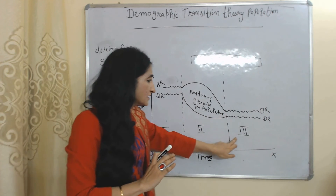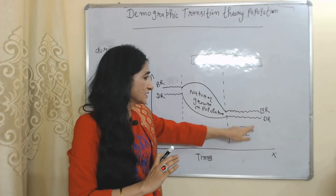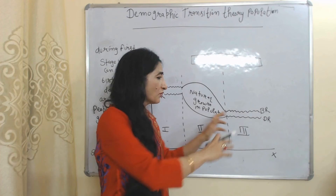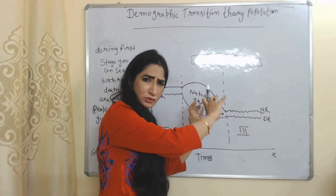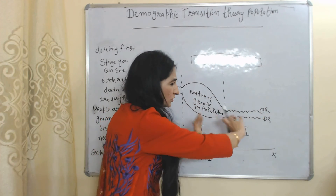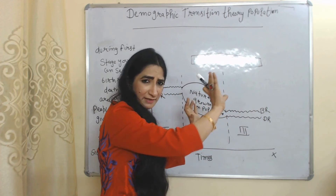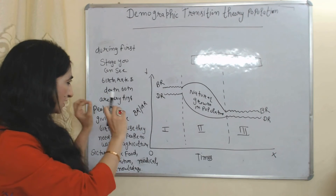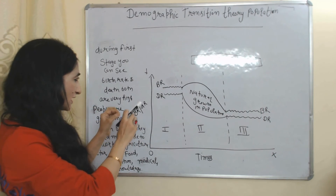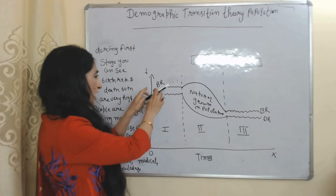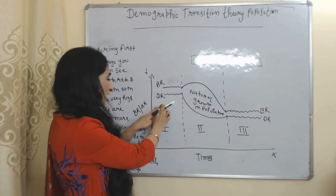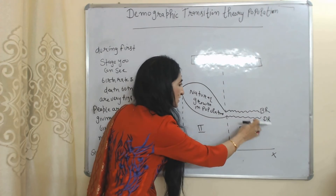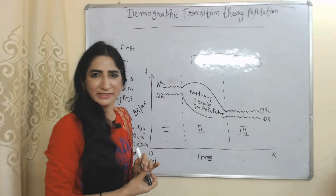During the third stage, birth rate and death rate both slow down significantly — both are declining. So this theory mainly talks about the transition from high birth and high death to low birth and low death rate.